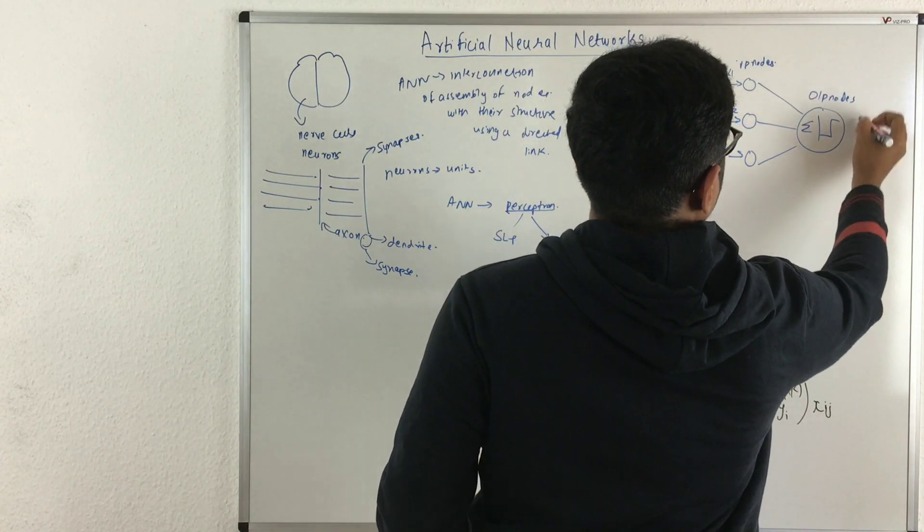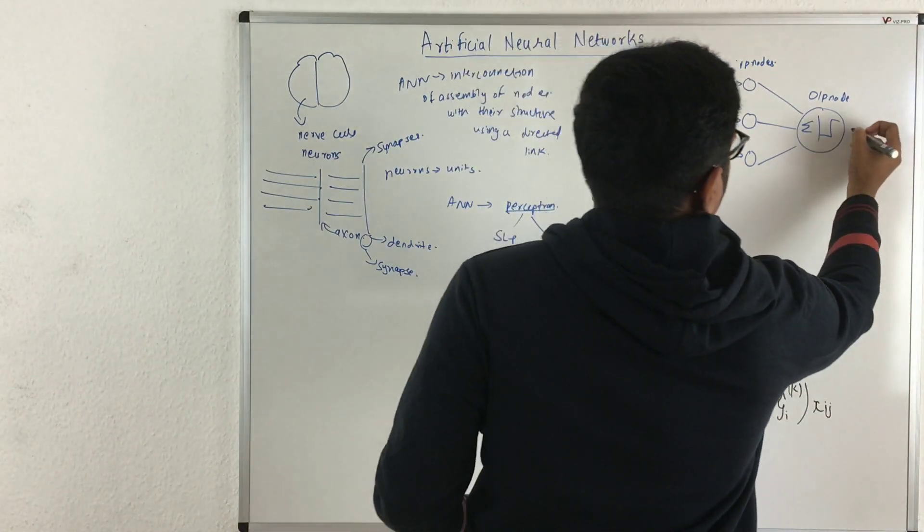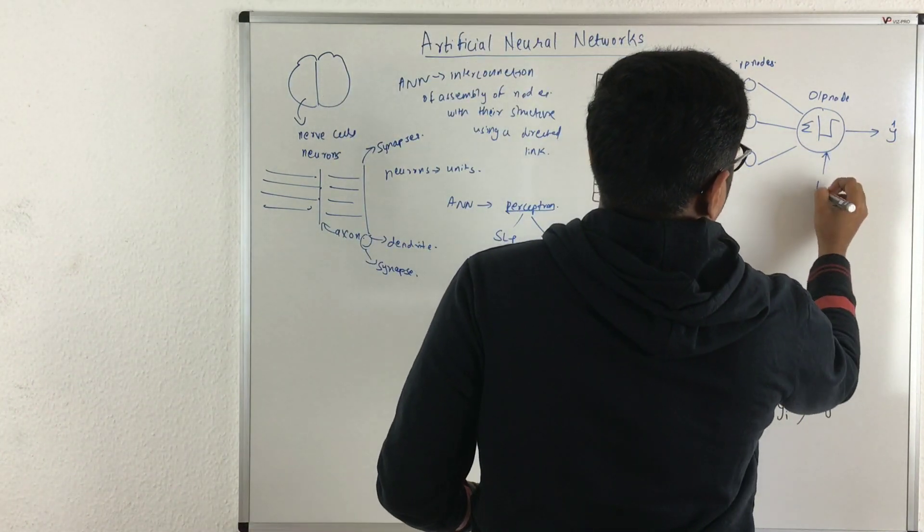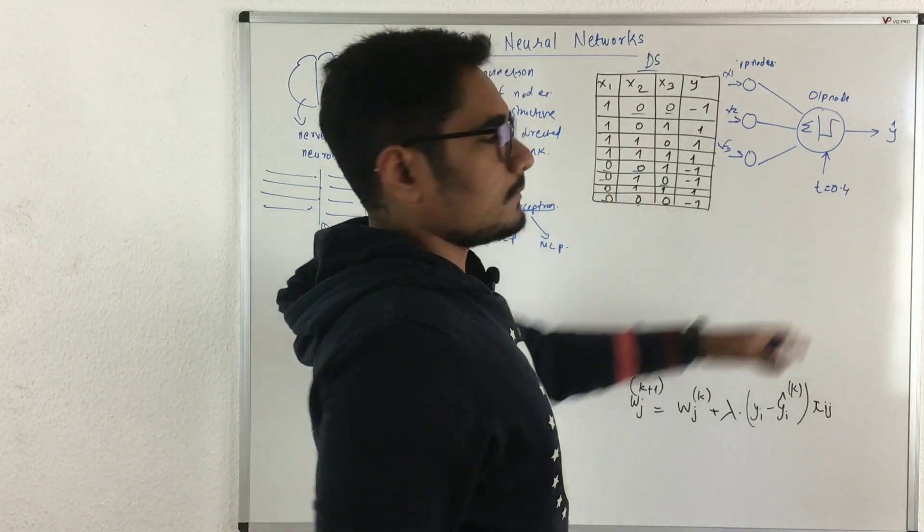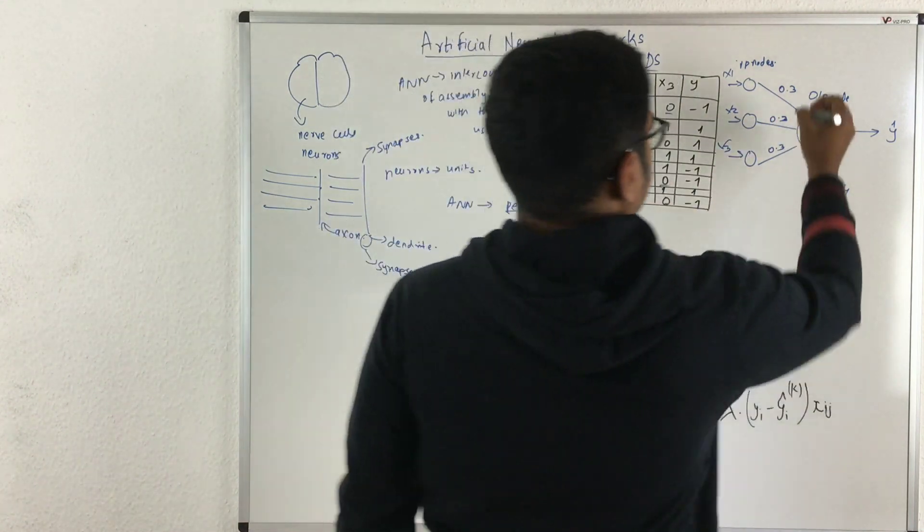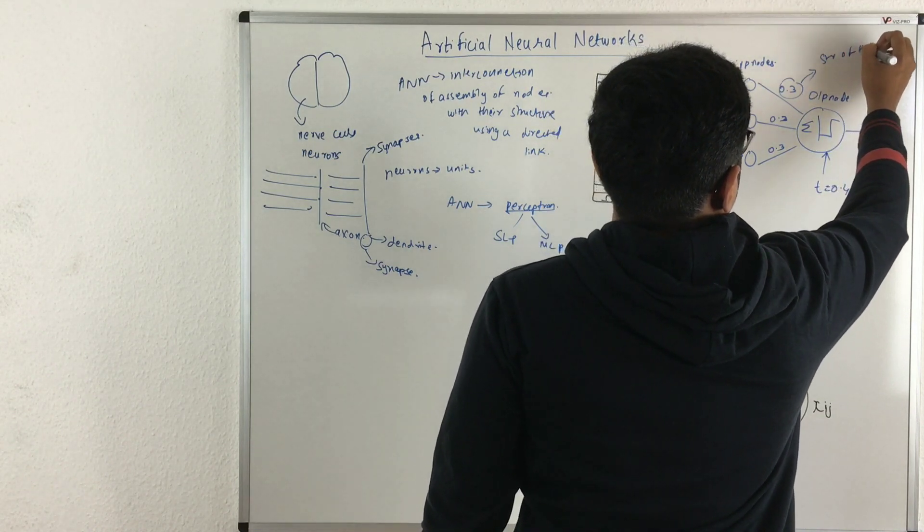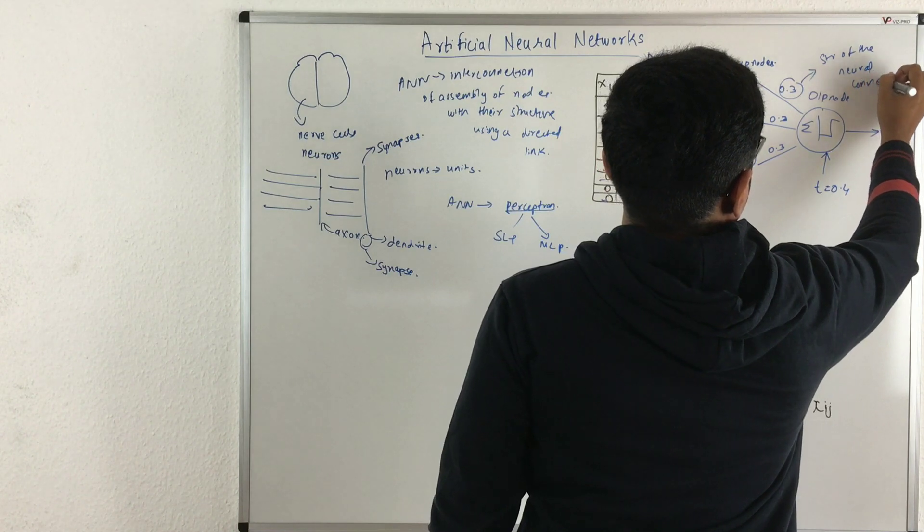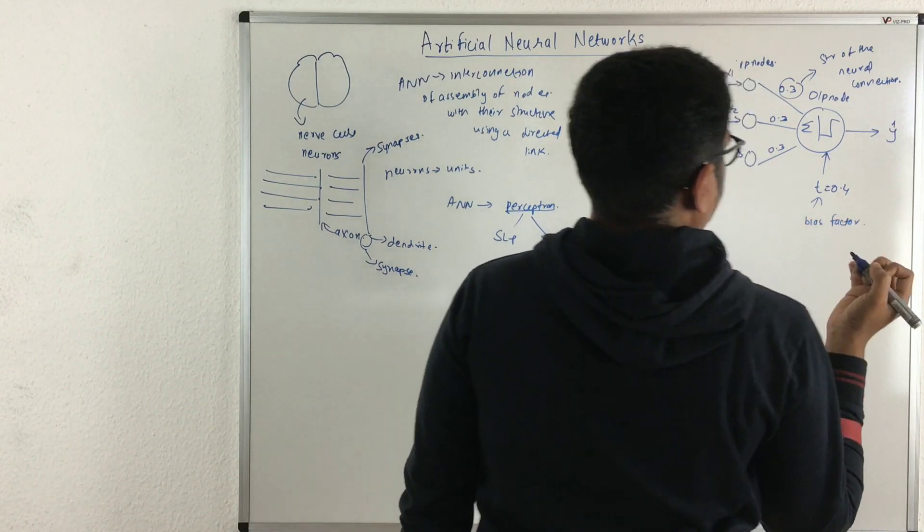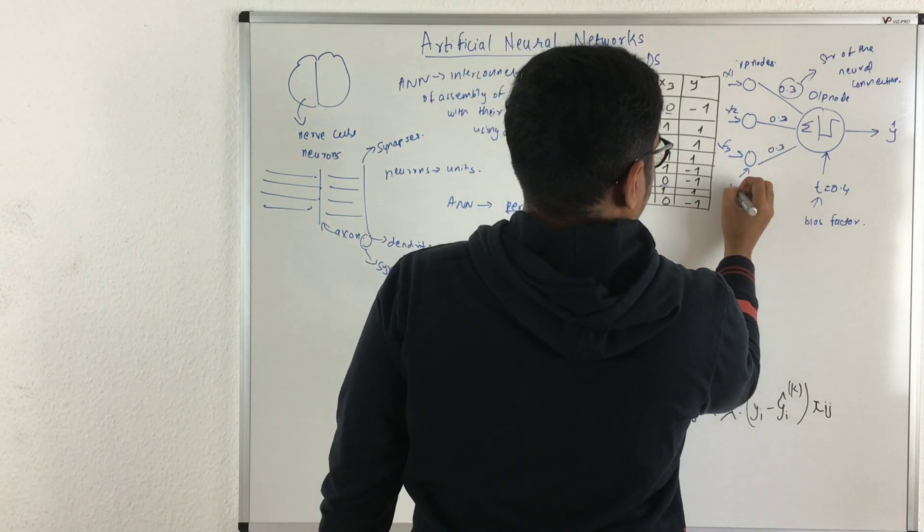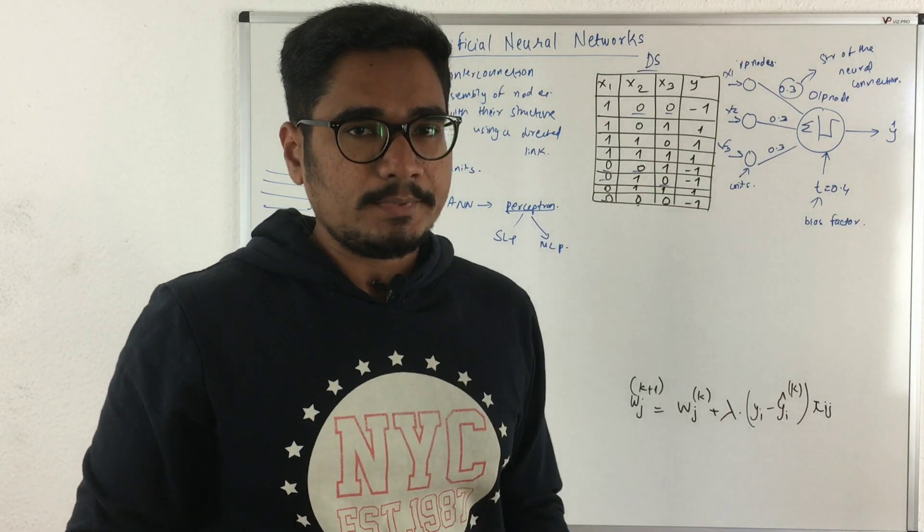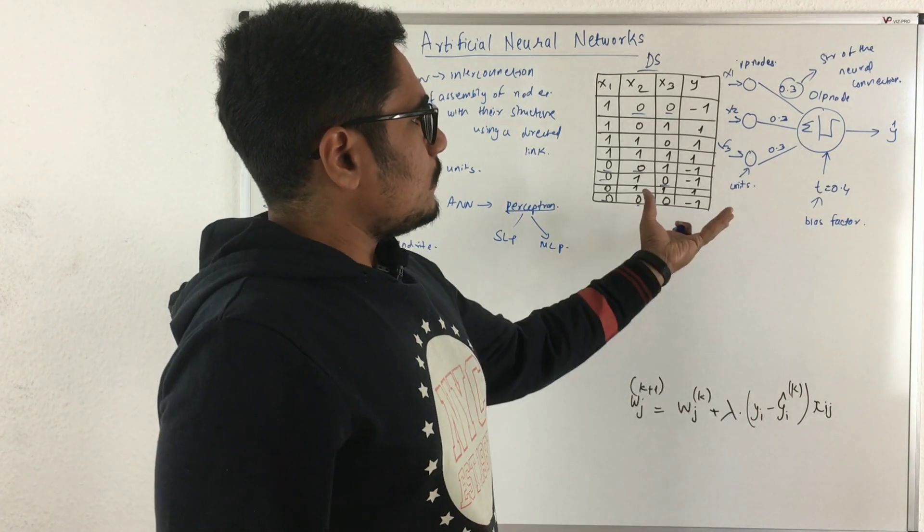Everything is connected to this output node. There is only one output node, though there can be many output nodes. This output will be something like y cap. It's a mathematical function where you apply some bias, let's say 0.4 bias. Then what we have is something called a weight. These weights basically represent the strength of the neural connection. T is called a bias factor, and these nodes are input nodes or units. So we constructed a simple perceptron model with the help of our relational database system.